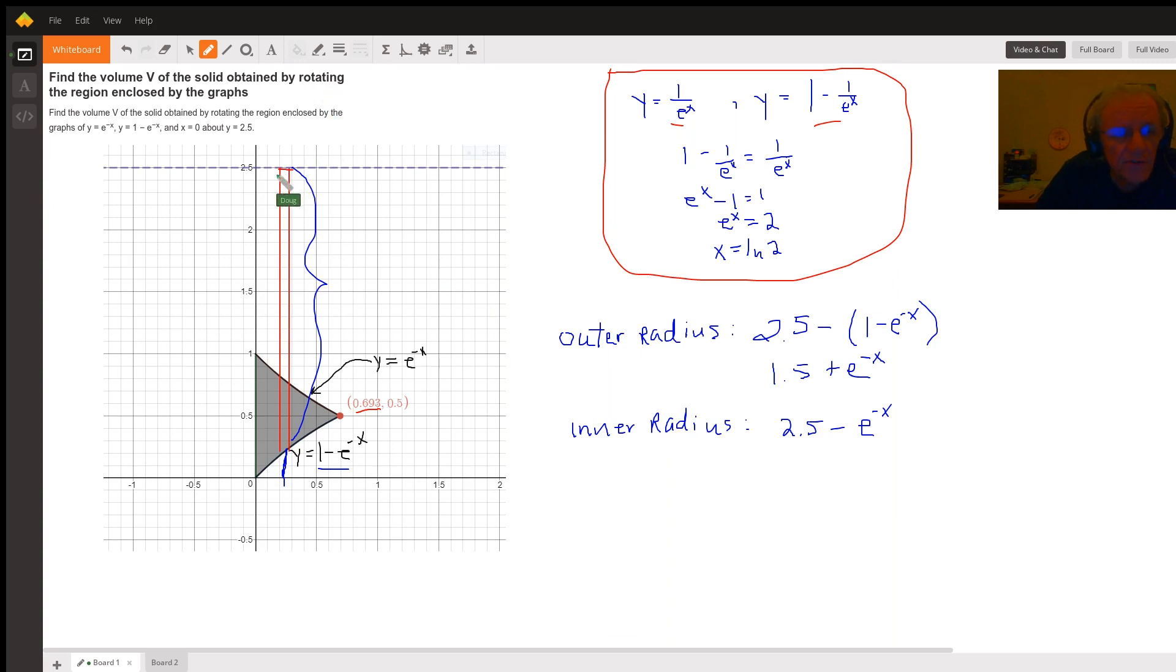The inner radius, similarly, will be this distance, which will be 2.5 take away this y value, which is e to the minus x. So 2.5 take away e to the minus x.